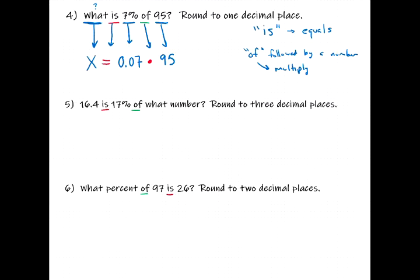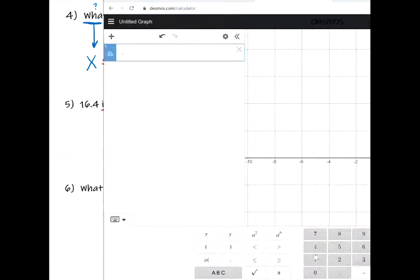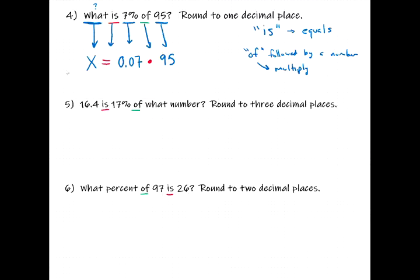We can solve this using Desmos: 0.07 times 95 equals 6.65. So x equals 6.65, but we're rounding to one decimal place. The next digit is 5, which means we round up, giving us 6.7. That's our final answer.